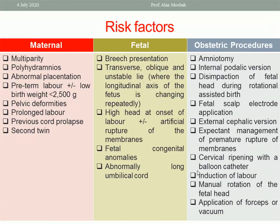Obstetrical procedures that are risk factors include internal podalic version, external cephalic version, amniotomy, fetal scalp electrode application, disimpaction of the fetal head, manual rotation of the fetal head, application of forceps or vacuum, cervical ripening using the balloon catheter, or induction of labour. All these are risk factors for cord prolapse.